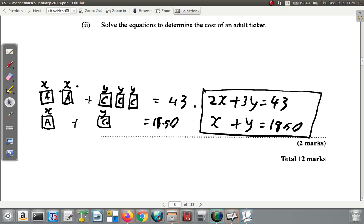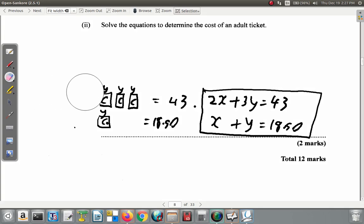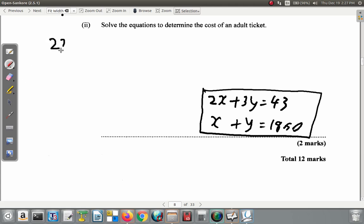So let's just make some space here. You now have both equations. So you can see that it's a pair of simultaneous equations. 2X plus 3Y is equal to 43, and X plus Y is equal to $18.50. Now we're going to use the process of elimination to solve it. Elimination is a bit quicker in this case than other methods.